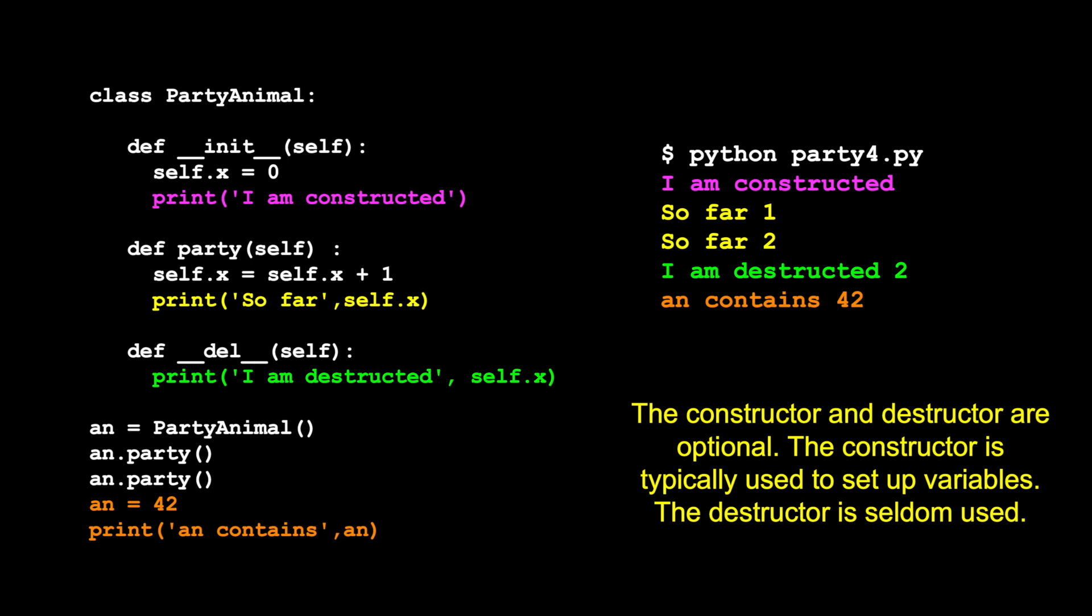So let's go ahead and run this. This is the constructing of it. In this case, this line right here is causing the 'I am constructed' message to come out. Then we do an.party and party, and that says one and two. And here's an interesting thing.